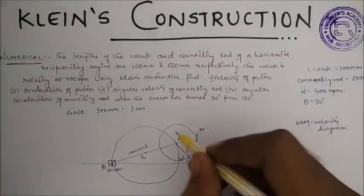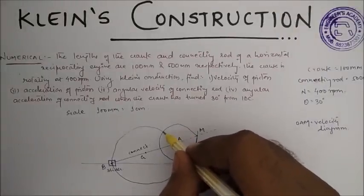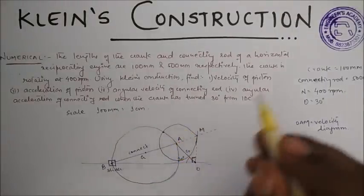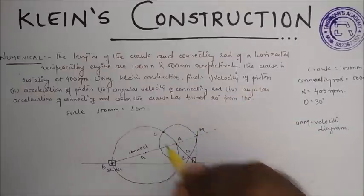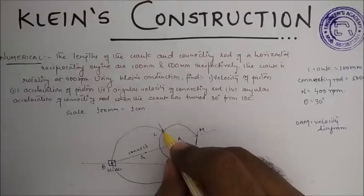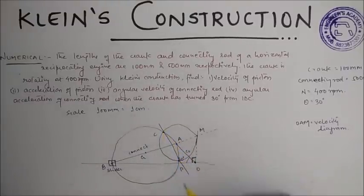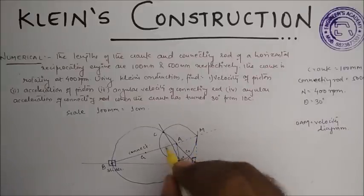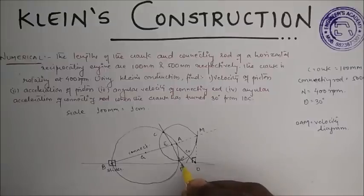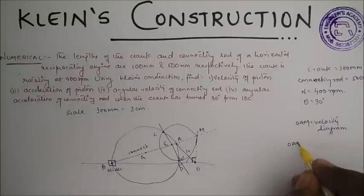like this. Okay, now this circle and this circle intersect at this point and at this point, let it be C and D. Join these points. Okay, now this line cuts this at E and let this point be F. Let this point be F. Now the form O, A, E, and F is the acceleration diagram.